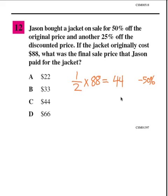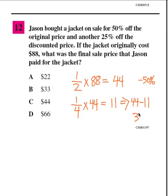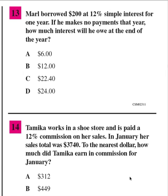Now we take 25% off the discounted price: one-fourth of 44 is 11, so 44 minus 11 is 33. Minus 50% then minus another 25%, the new price is $33. The answer is B.